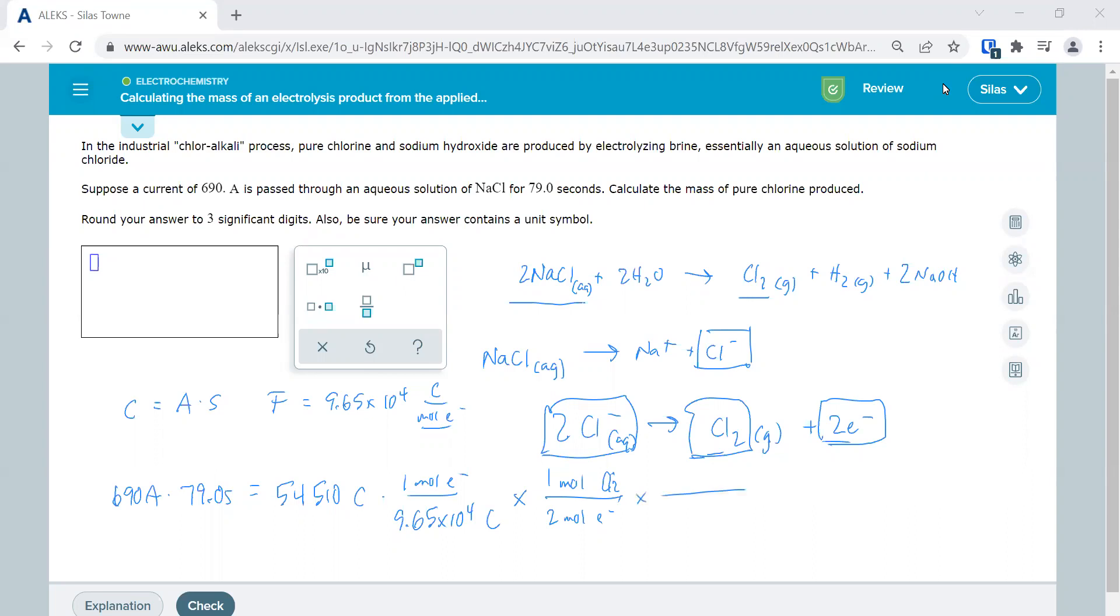Then the last thing would be for every one mole of Cl2, I have 70.91 grams. So I can get all the way from amps and seconds, which is coulombs, to grams. And I get 20.03 grams of Cl2. Now, it says around three significant digits. So it's going to be 20.0 grams.